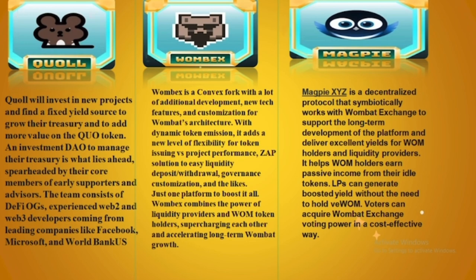Magpie is a decentralized protocol that works symbiotically with Wombat Exchange to support its long-term development. It delivers excellent yield for WOMB holders and liquidity providers, helps WOMB holders earn passive income, and allows LPs to generate boosted yield without needing to hold vWOM. Voters can acquire Wombat Exchange voting power in a cost-effective way.